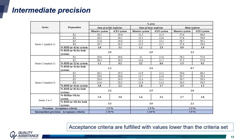Going further, we had in total three series of analyses where samples were prepared by two analysts. For each series, repeatability is lower than the 5% criteria for acidic and basic variants and lower than the 3% criteria for the main variants — both when taking each system individually and when combining data from both systems. Intermediate precision was calculated based on these three series. Criteria were set below 10% for acidic and basic variants and below 5% for the main variants. These criteria are met for each system individually — taking into account 10 values — and also when combining data from both systems (20 values), indicating that the methods are equivalent.